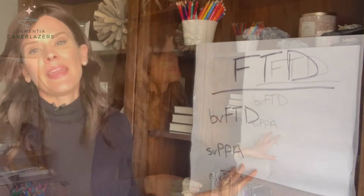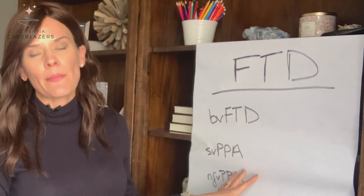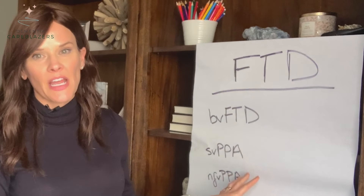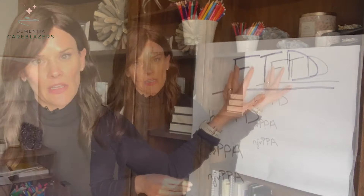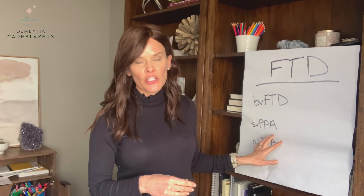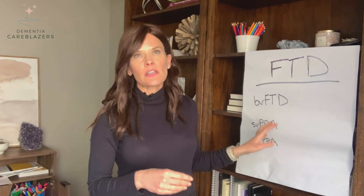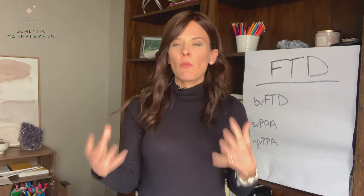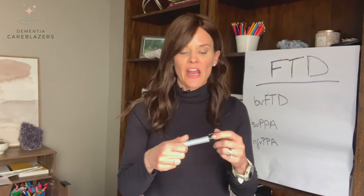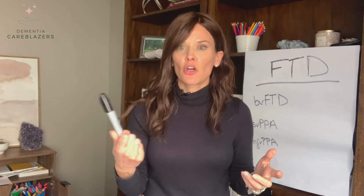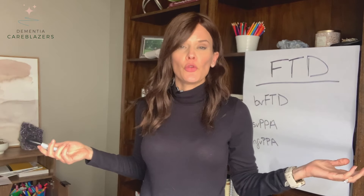There's also the semantic primary progressive aphasia subtype of FTD. In the semantic variation, the person has a hard time identifying objects and people, but their language abilities might be okay. They might have some word-finding difficulties — they might look at a marker and not know it's a marker, or look at you and not recognize who you are.